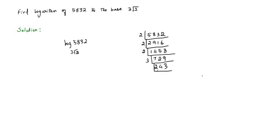243 is also odd. Adding its digits: 2 + 4 + 3 = 9, which is a multiple of 3, so we can divide by 3 to get 81. 8 + 1 = 9, a multiple of 3, divide again to get 27. 27 is a multiple of 3, divide to get 9, divide again to get 3, and finally 3 ÷ 3 = 1. So 5832 equals 3⁶ × 2³.